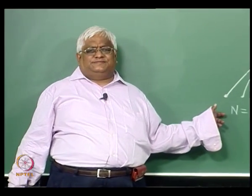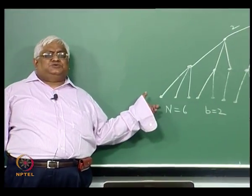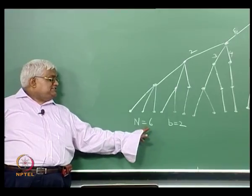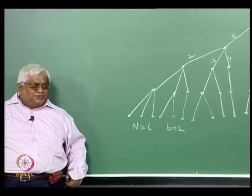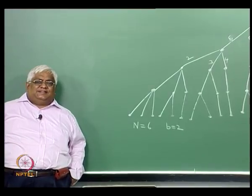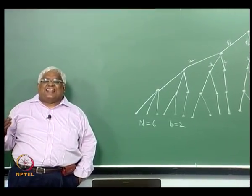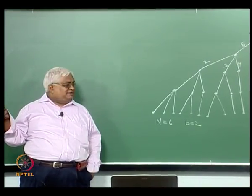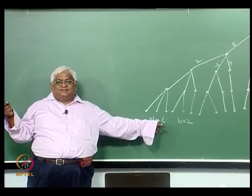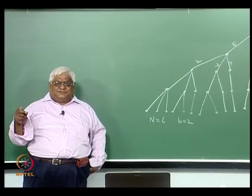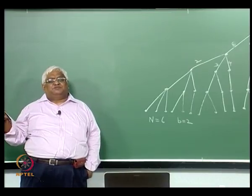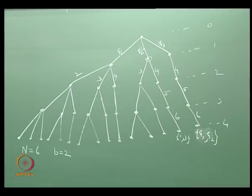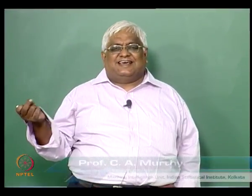You will find this one as a solution tree for the branch and bound algorithm for N equal to 6 and b equal to 2. One can give questions of the sort: draw the solution tree for branch and bound algorithm when N is equal to 7, b equal to 2, or N equal to 7, b equal to 3, or other numbers. So this can be given as class exercises.